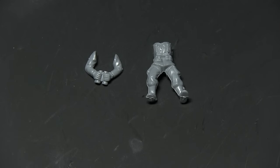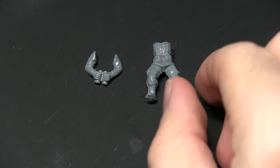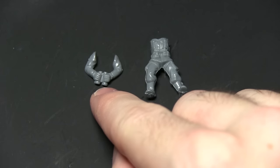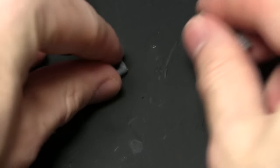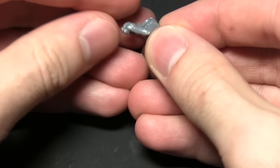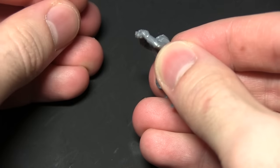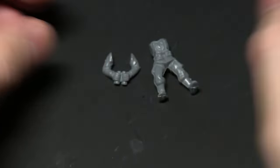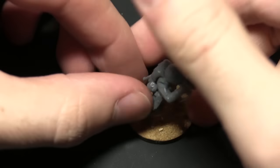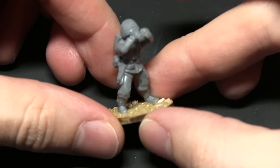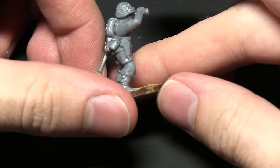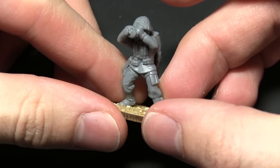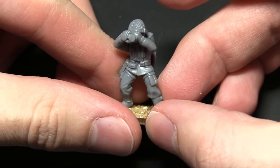For the first anti-tank crew member you'll need the following components. First of all you'll need component 3 which are these standing legs and body as well as component 33 which are these binoculars. Now we're going to be assembling these like so, so the binoculars are up to the face. And you can use any head or webbing combination that you'd like for the rest of this miniature. And here we have the first anti-tank crew member. You can see we've got this looking through the binoculars picking out targets for the anti-tank gun. So that's the first crew member completed, let's move on to the second.